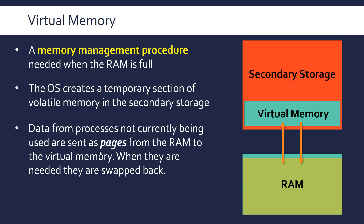A page is the technical term for this mini-subtopic of virtual memory — it's just a block of data. So some of the data from applications not currently being used is moved from the RAM to this newly created part of the secondary storage, which is virtual memory. This relies on the fact that you've actually got spare capacity in your secondary storage. When you reopen a program that's been moved to the secondary storage, it is swapped back into RAM.